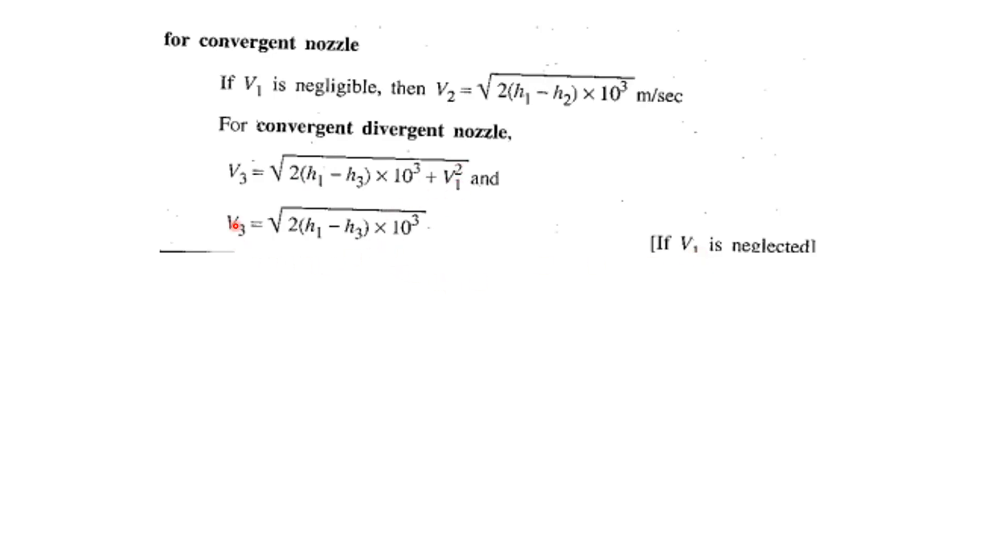We get the term as V₃ = √(2(h₁ - h₃) × 10³). So we can find the exit velocity when we know the change in enthalpy of the steam as it flows from inlet to exit. Thank you.